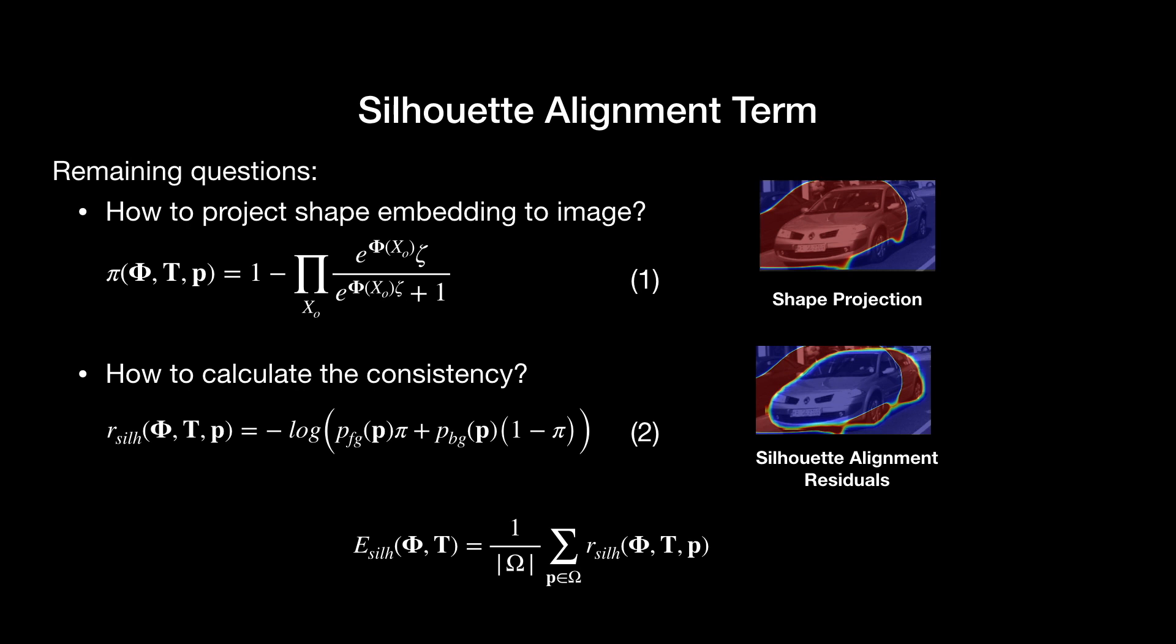We define the shape projection score for a pixel as π in equation 1, which is a function of the current object shape Φ, its current pose T, and the pixel coordinate p. The score is computed by sampling 3D points along the ray and accumulating the signed distances at these points. As a result, pixels within the projection get higher scores close to 1, and 0 for those outside the projection.